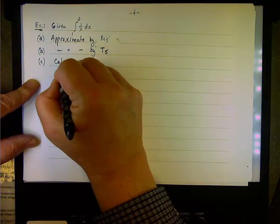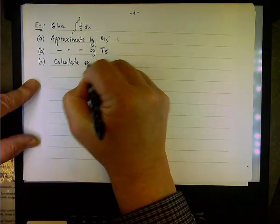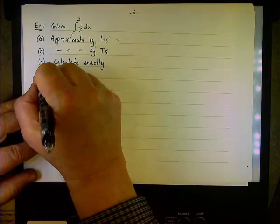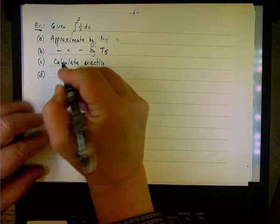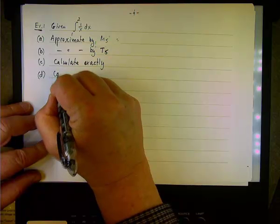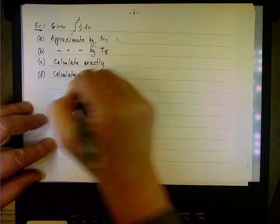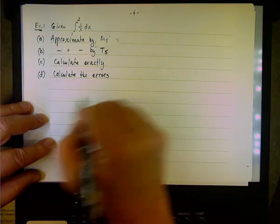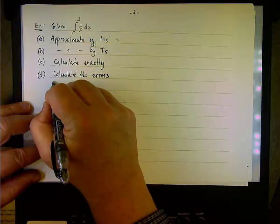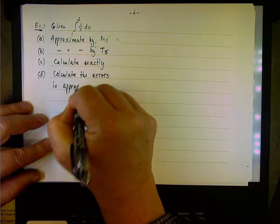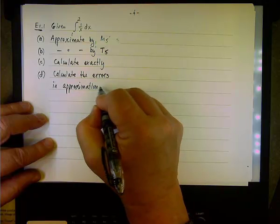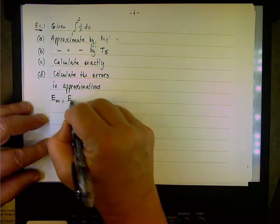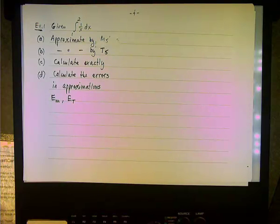And lastly, we're going to calculate exactly, and D, calculate the errors or the estimation error, the error in approximation. And we have notation for those errors. We're going to call them E for error, E sub m for the midpoint, and E sub t for the error in the trapezoidal method.